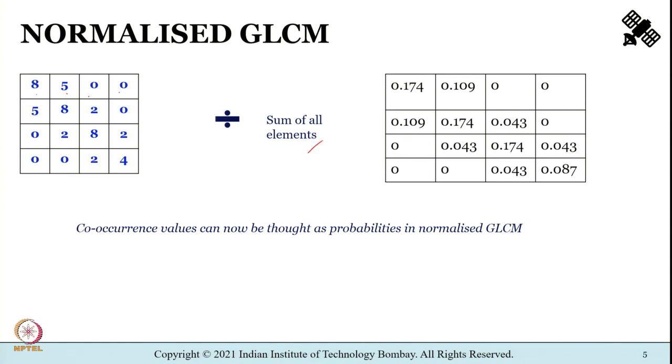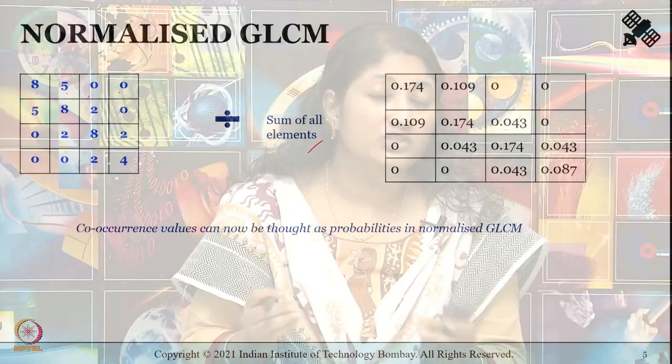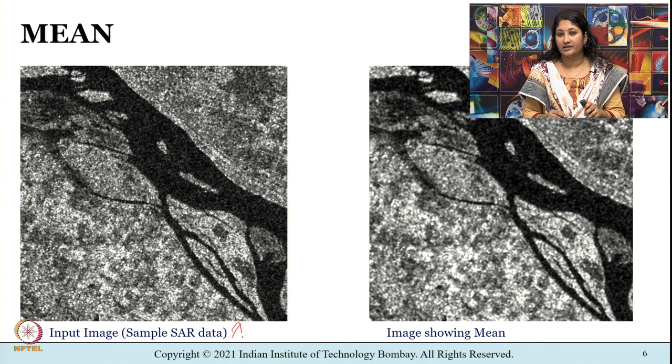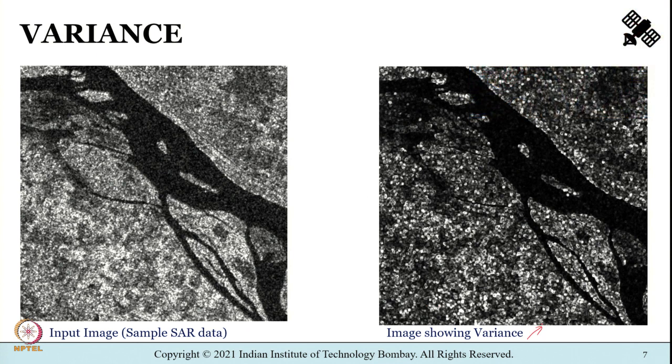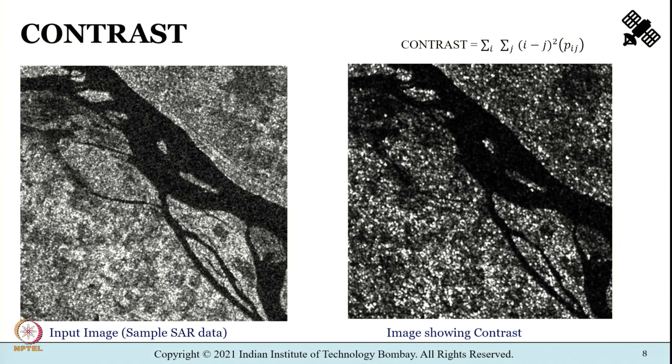Now let us understand the different textural features we can extract from a GLCM matrix. Until now we focused on how to compute GLCM, but now we want to understand how textural features can be extracted from it. Shown here is the input SAR image on the left side and on the right side the image showing mean. Similarly, we can have an image showing variance. If you go through the paper by Haralick et al. 1973, you will find the different textural features explained there. A few of them we will discuss as part of this lecture.